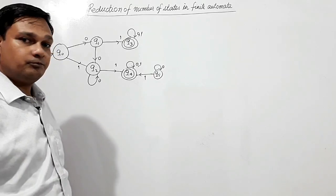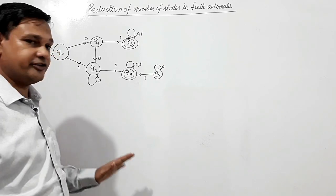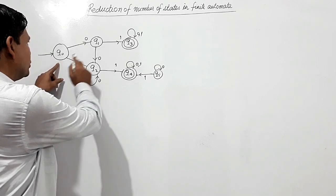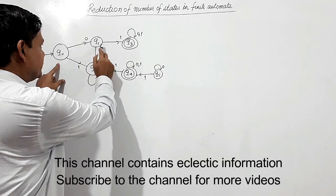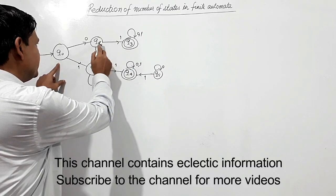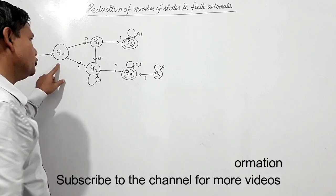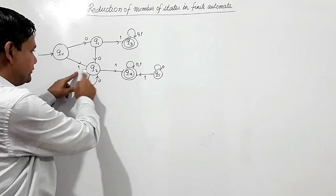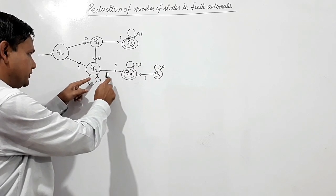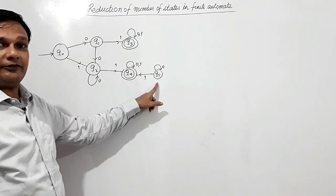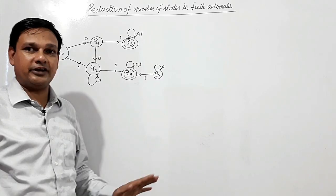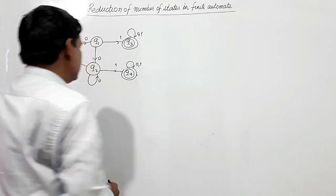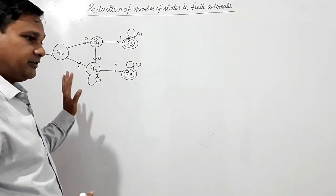First of all, we have to check which states are not reachable from the initial state. We can see Q0 to Q1 is reached on symbol 0, Q1 to Q3 on symbol 1, Q0 to Q2 on symbol 1, and Q2 to Q4 on symbol 1. But Q5 is not reachable, so such states should be eliminated. We are eliminating this state.